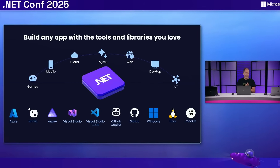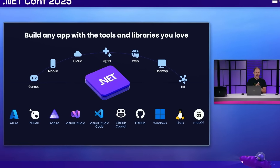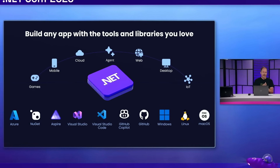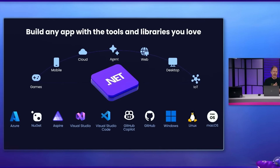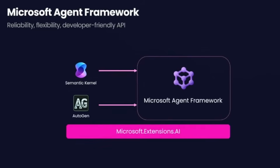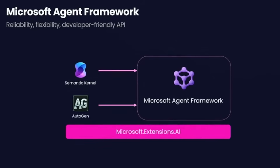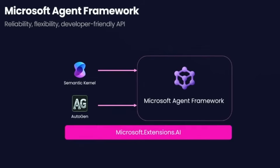At .NET Conf, Microsoft presented a familiar slide with the ecosystem for .NET development, including Microsoft Azure, Visual Studio, and other development tools. However, there's an entirely new application type on this slide – Agents. We can now build Agents using the .NET Agent Framework, which is the unification of Semantic Kernel and Autogen.